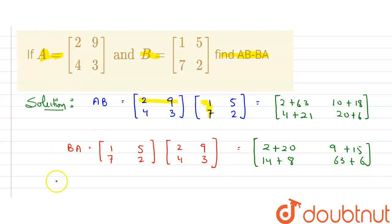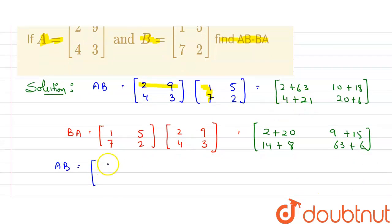Let's solve these two matrices. So AB will be equals to, add both the values here. 2 plus 63, that will be 65. 4 plus 21, 25. 28 here and 26 here. This is my AB matrix.